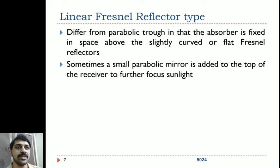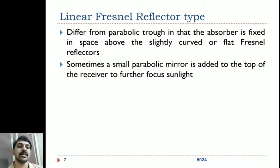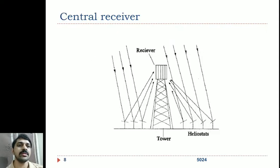The linear Fresnel reflector differs from a parabolic trough in that the absorber is fixed in space above the slightly curved or flat Fresnel reflectors — which need not always be flat, they can be curved. Sometimes a small parabolic mirror is added to the top of the receiver to further focus the light. In the central receiver placed above the Fresnel reflectors, this small parabolic mirror intensifies the solar energy further.